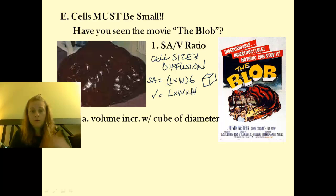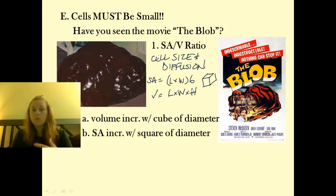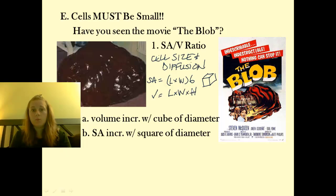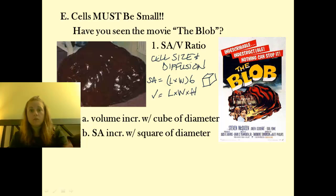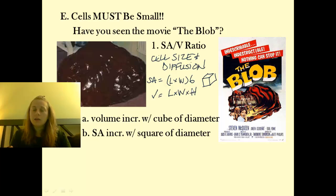Volume increases by the cube — so as the diameter increases, the amount of space it takes up grows cubically. Whereas surface area increases with the square of the diameter. They are not increasing at the same rate. As something gets larger, the ratio of surface area to volume actually decreases. What a cell wants is a really high surface area to volume ratio so that it can move things through it and complete activities much quicker.